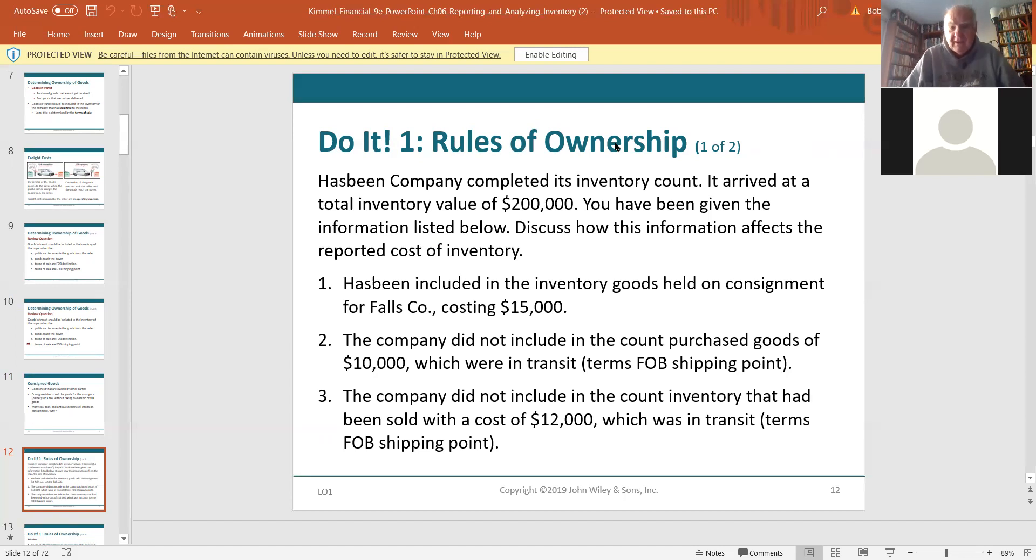I'll answer the question for you. It belongs to Falls Company. It does not belong to Has-been. Has-been is just going to try to sell it on behalf of Falls. The company did not include a purchase goods of $10,000, which were in transit, FOB shipping point. Here, what happened at the shipping point, Leiber? For number two, the company did not include in the count purchased goods of $10,000, which were in transit. Okay, means they're on a truck somewhere. The terms were FOB shipping point. So they should be added, the $10,000 added to the inventory count? Absolutely, because they owned it as soon as it left the rail yard of the other company.